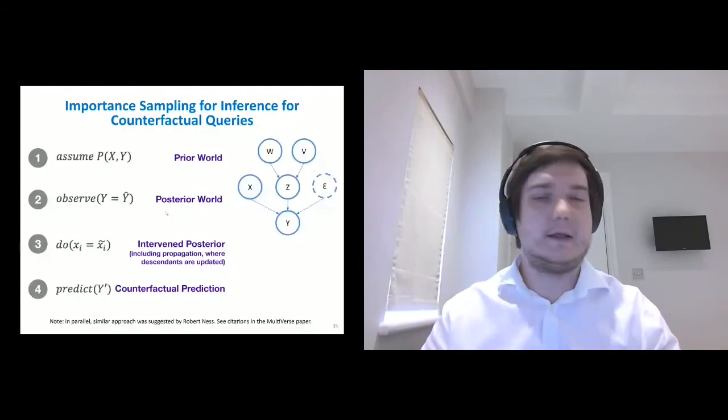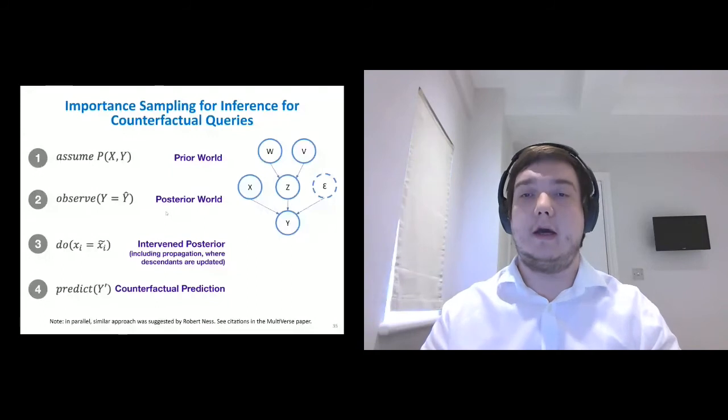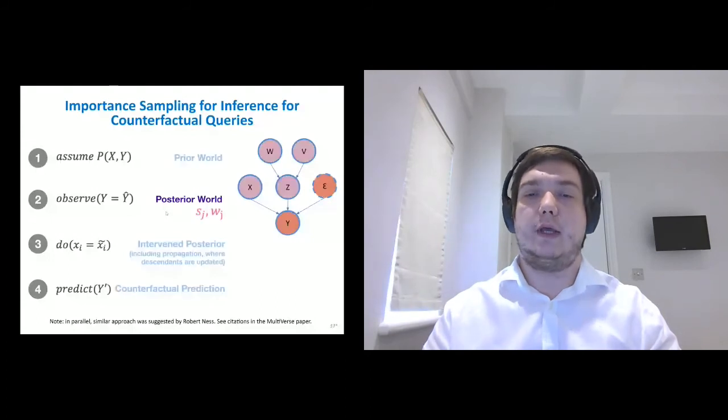To provide an example, we have a network, and the sample from the proposal distribution, we receive weights, and we intervene, for example, on V, and then we intervene on Z and Y because they depend on V, and then we receive many samples like this and calculate statistics of interest.